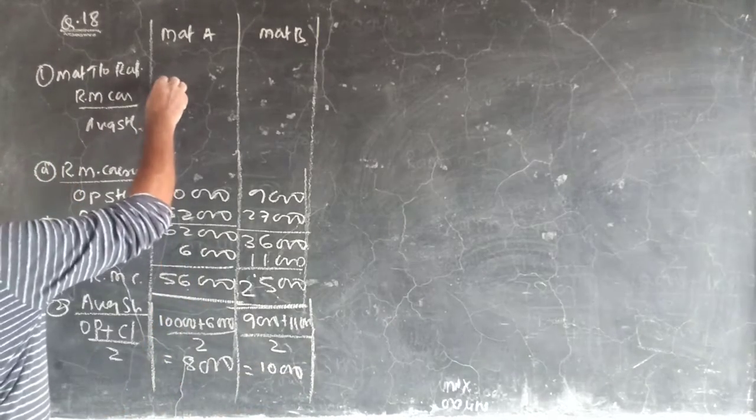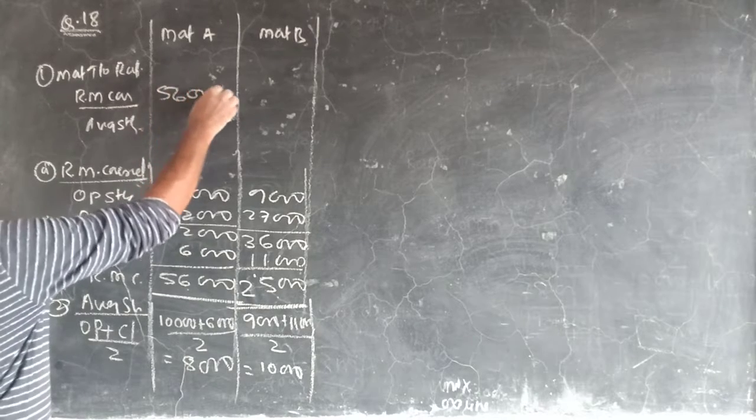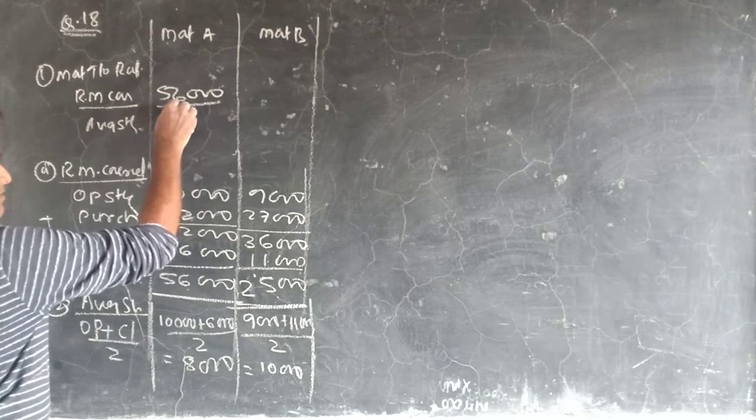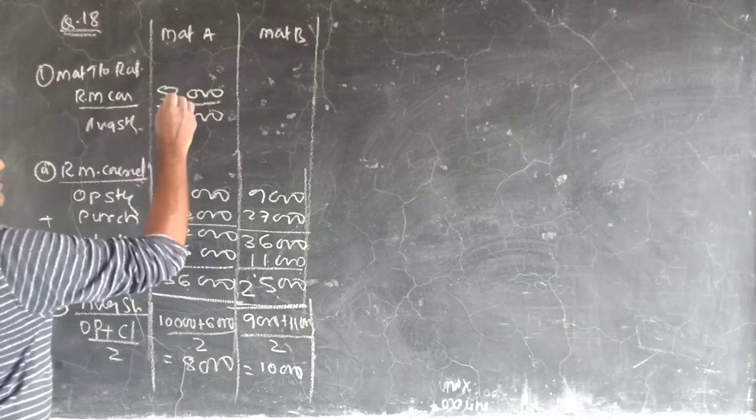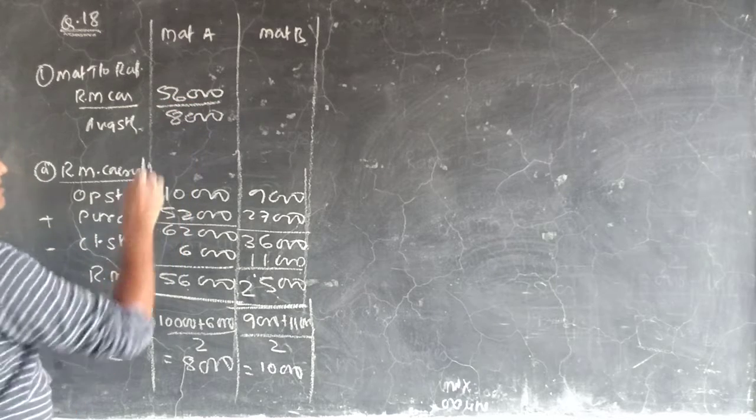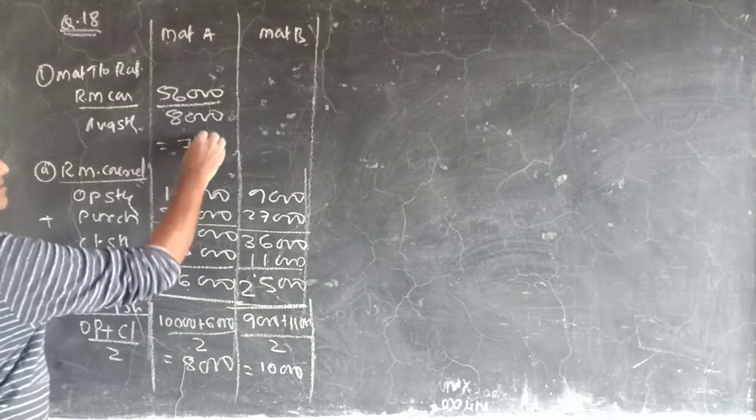That's 56,000 divided by 8,000, which equals 7 times.